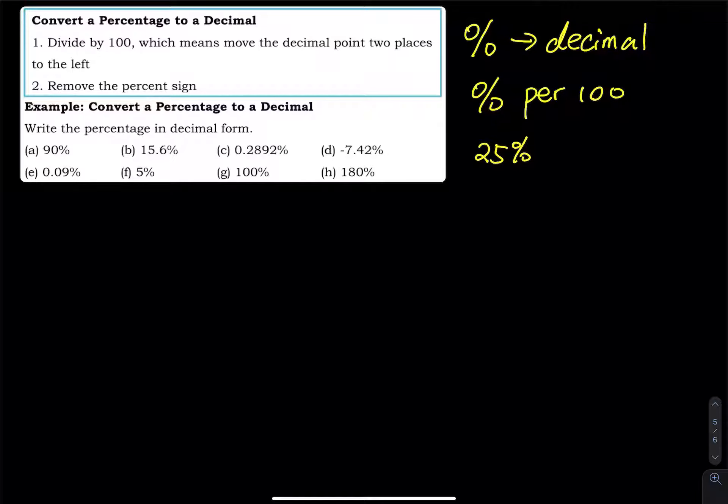So per 100 means you take 25 divided by 100. So if you don't want to bother to do the math by yourself, just do this on your calculator. 25 divided by 100 equals 0.25. So that is the decimal.